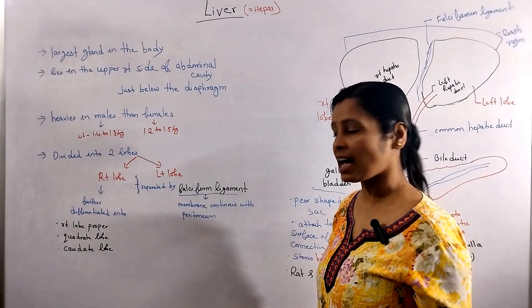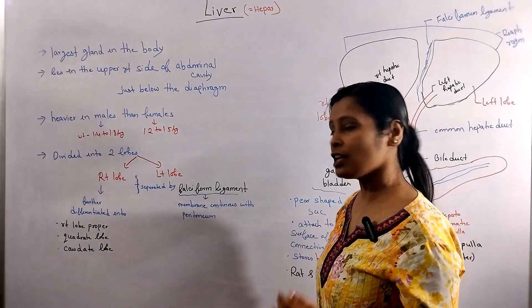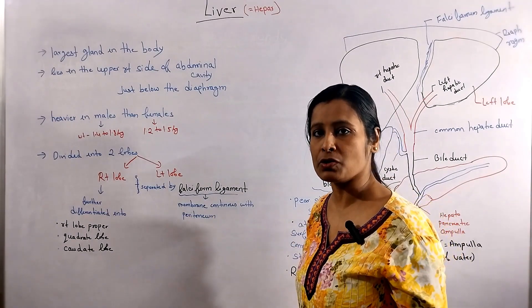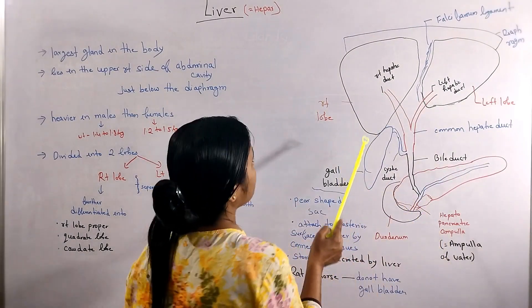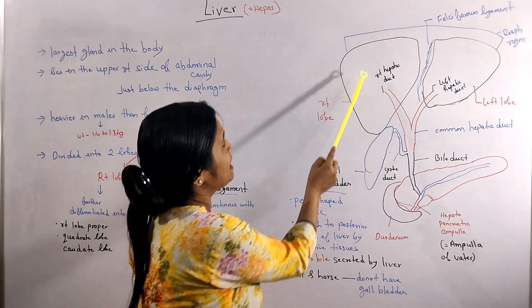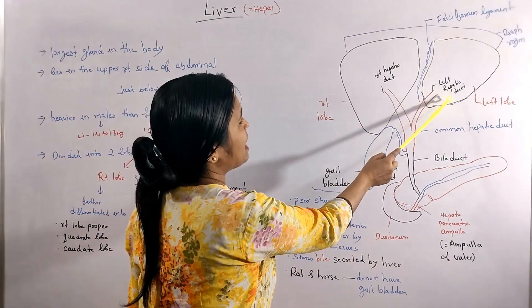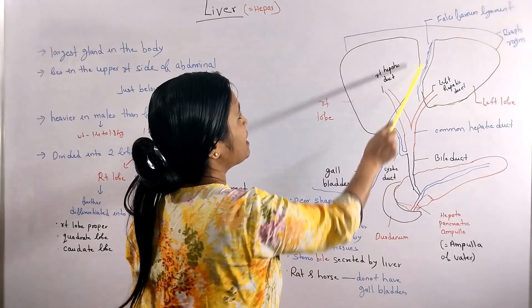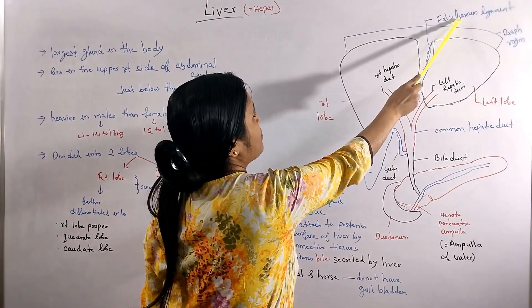The right lobe and the left lobe are separated by the falciform ligament. The falciform ligament is a membrane which is continuous with the peritoneum. So the two lobes are divided by the falciform ligament.